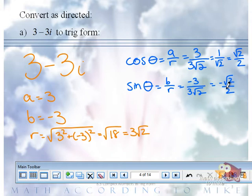What angle has a cosine value of positive radical 2 over 2 and a sine value of negative radical 2 over 2? 315 degrees.